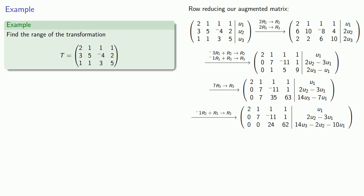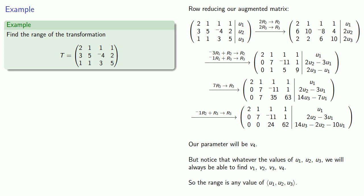Since v4 is never the leading variable, it'll be our parameter. And the thing to notice here is that whatever the values we have for u1, u2, and u3, we will be able to find a solution in terms of v1, v2, v3, and v4. So since this transformation takes vectors with 4 components to vectors with 3 components, what this means is that any vector with 3 components can be produced by transforming a vector with 4 components. So the range includes any value of those vectors with 3 components.